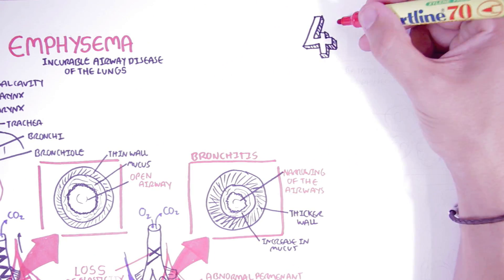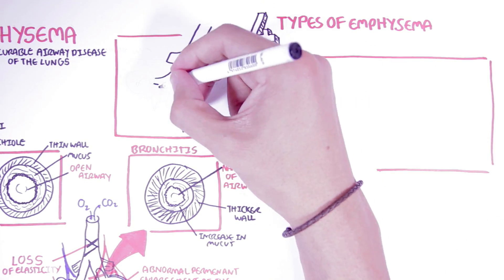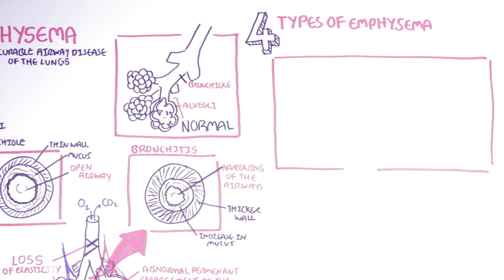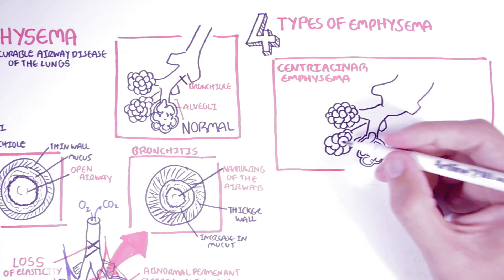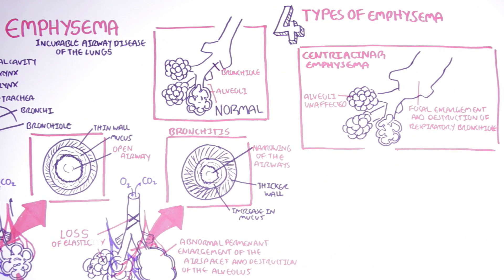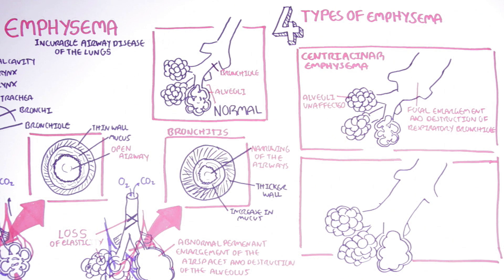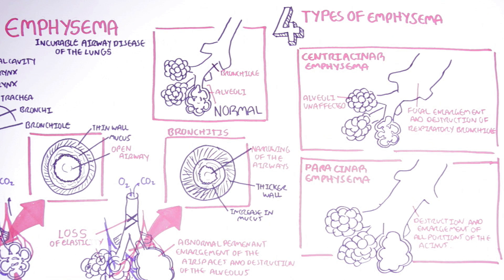There are four main types of emphysema. The first type is centriacinar emphysema, where there is focal enlargement and destruction of the respiratory bronchioles, while the distal alveoli are unaffected. The second type is paracinar emphysema, which involves the enlargement and destruction of all portions of the acinus — essentially the bronchioles and the alveoli.